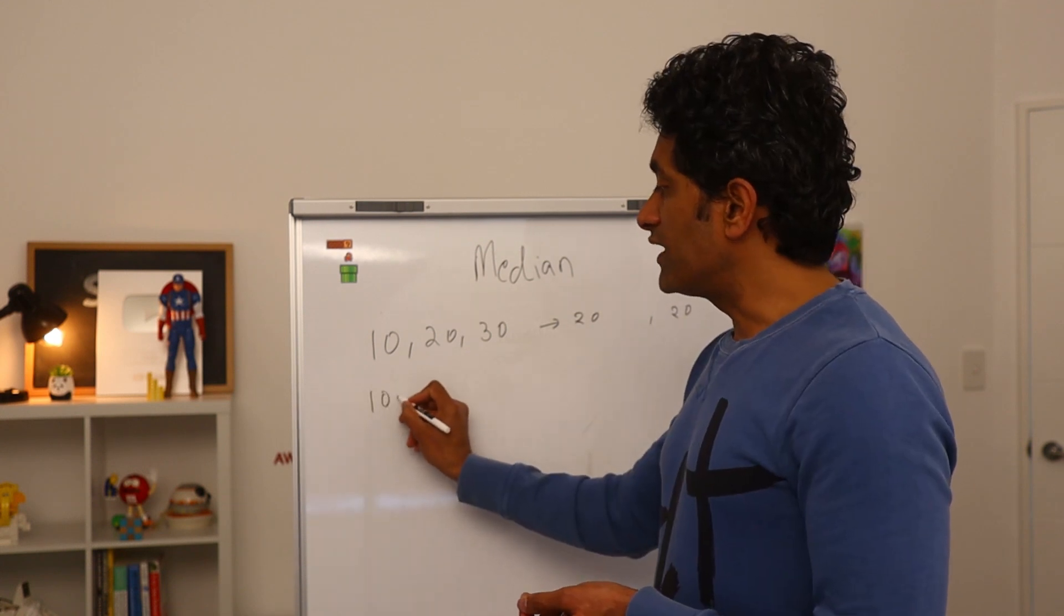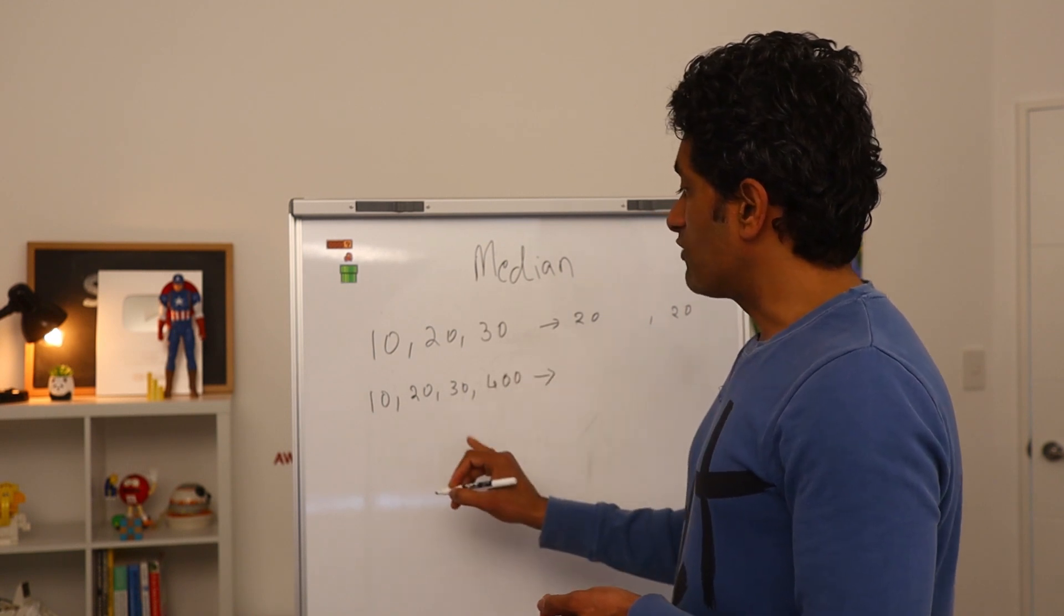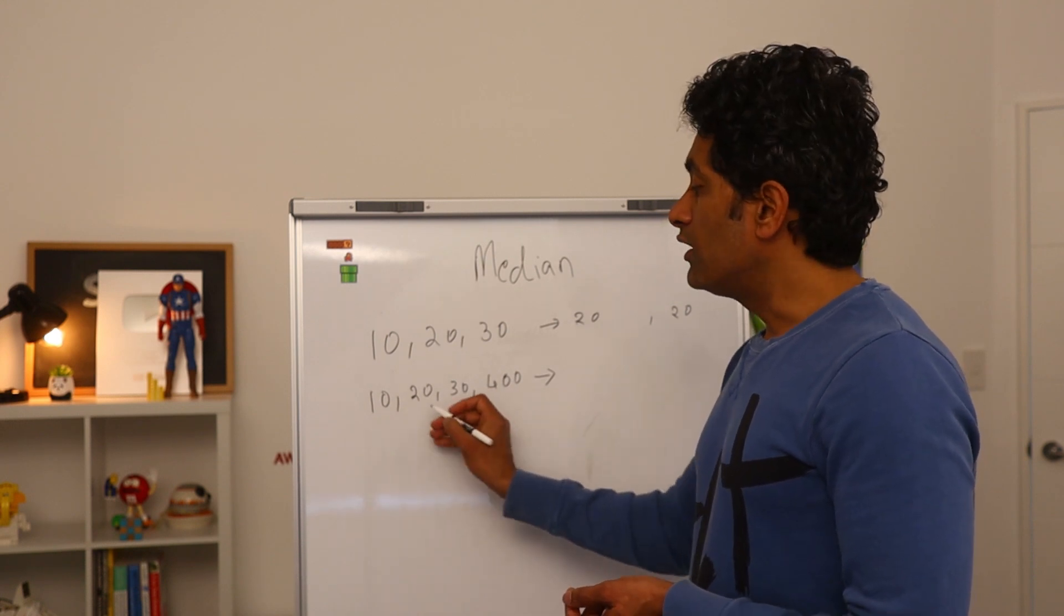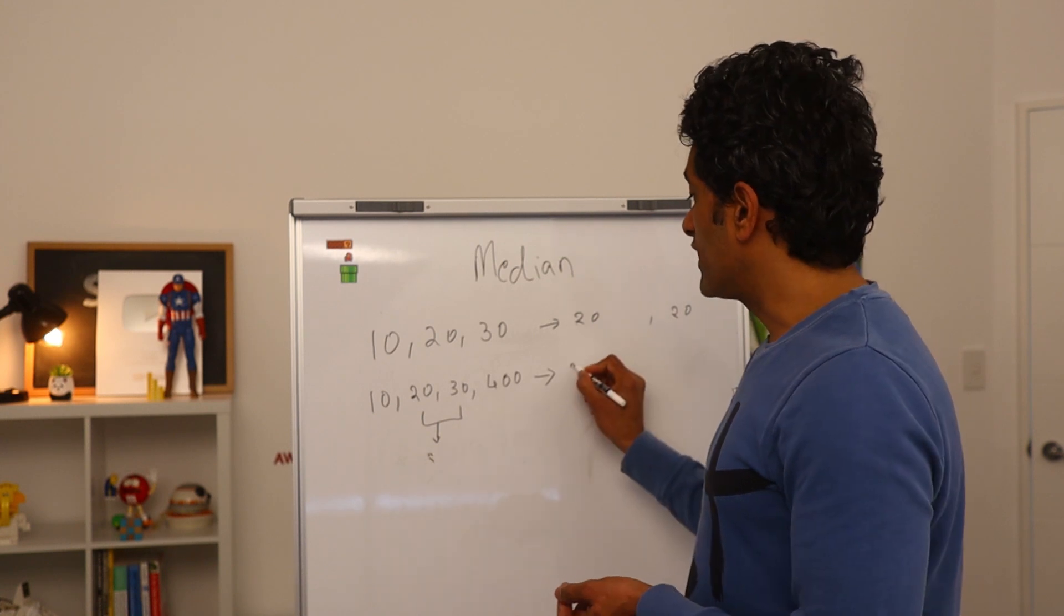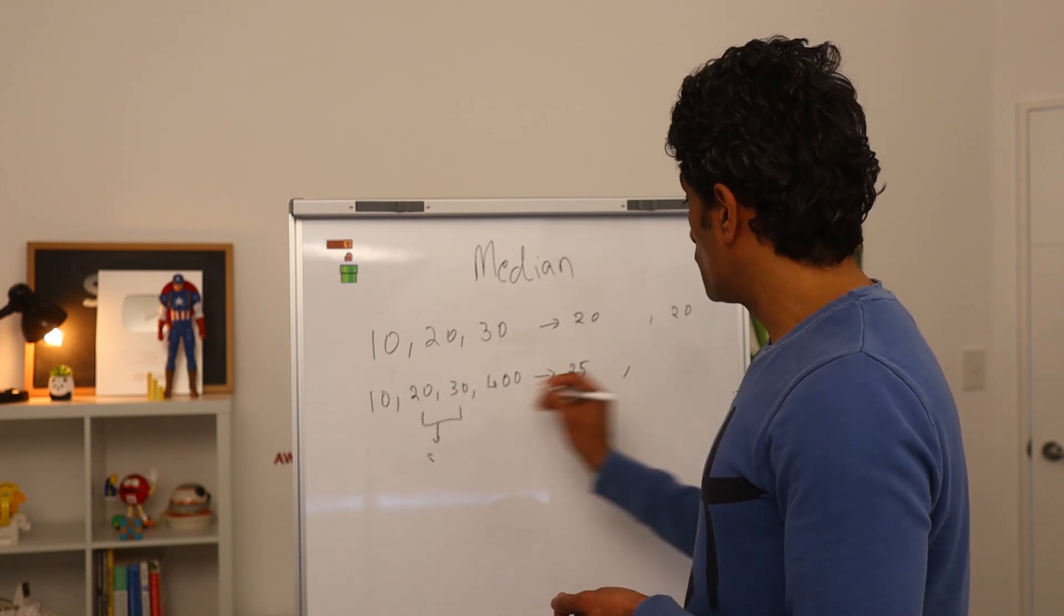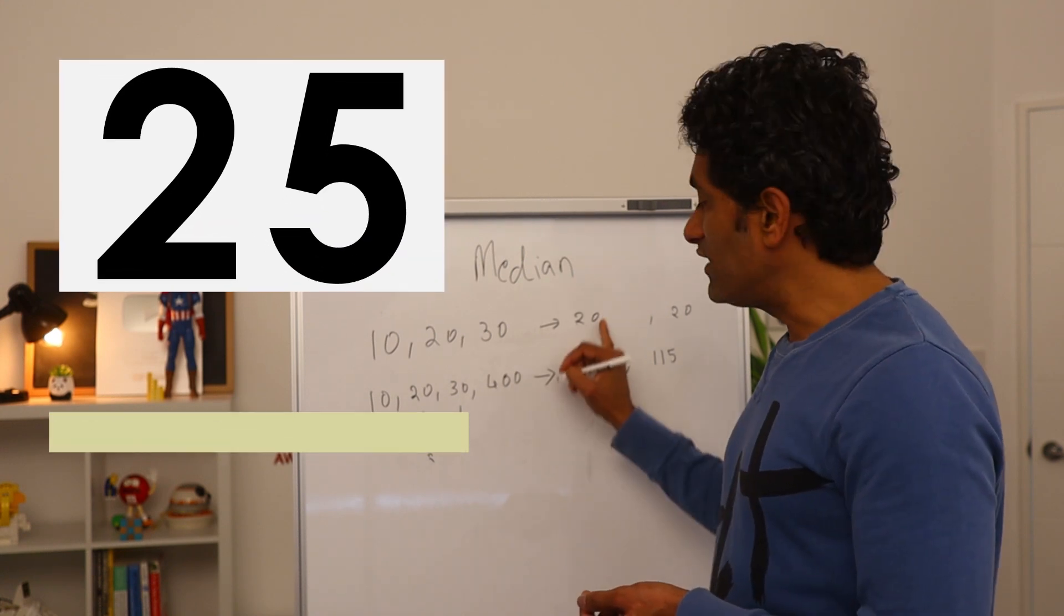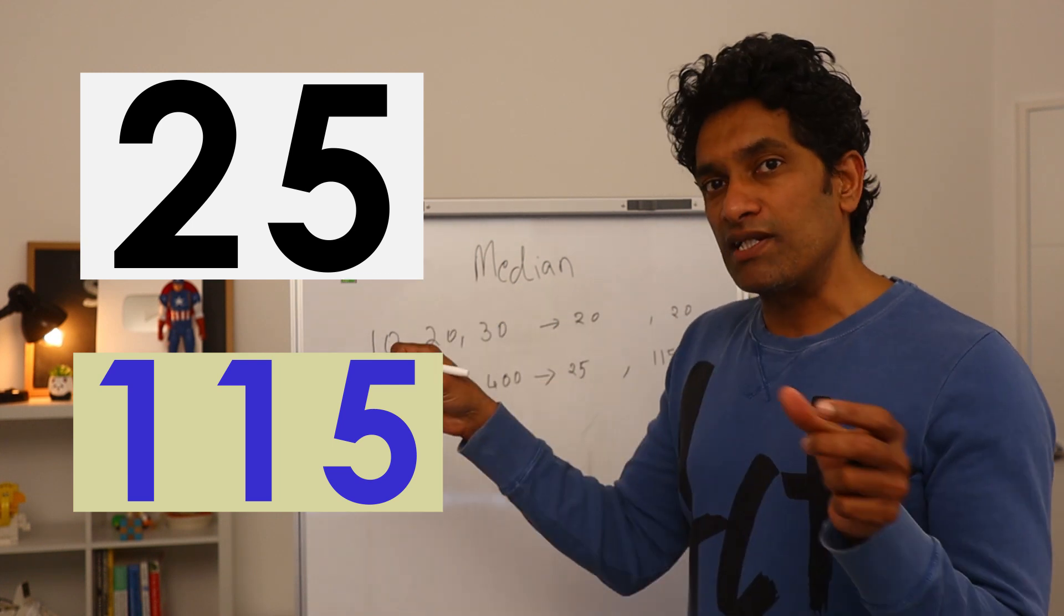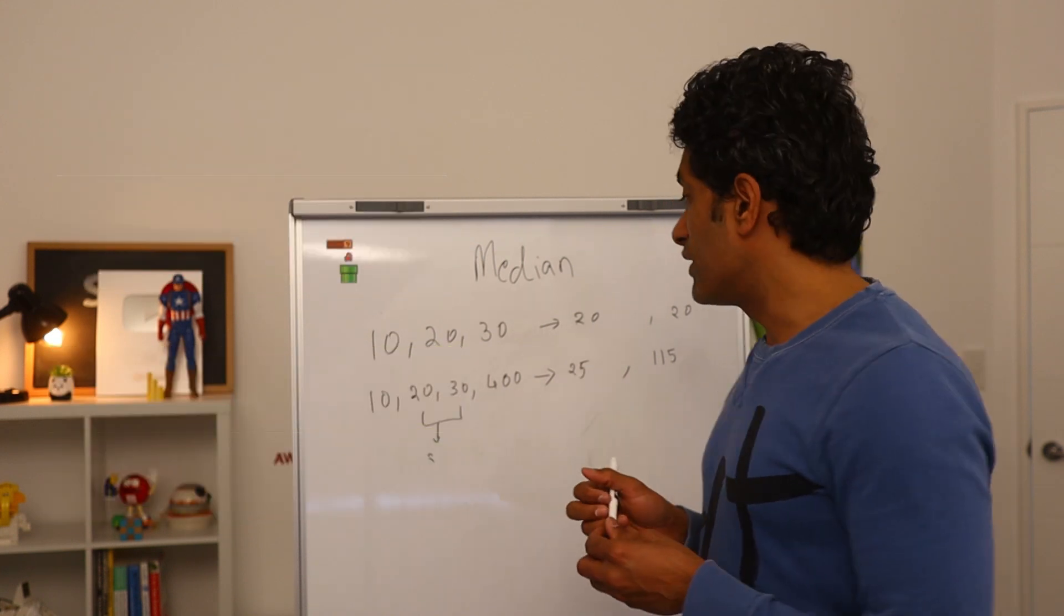But now see what happens with the Bill Gates scenario. 10, 20, 30 and then 400. In this case, our median is since the data has no middle point, there are even number of values, we take the middle two points and average them out. So the median becomes 25. Whereas on the other hand, the average of this group is 115. So you see that there is not so much movement in the median because the middle is still there. While there are some extreme values, they are on either sides of the data. So our median doesn't get pulled by that much.